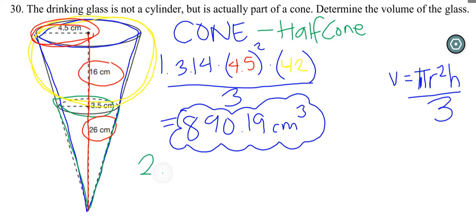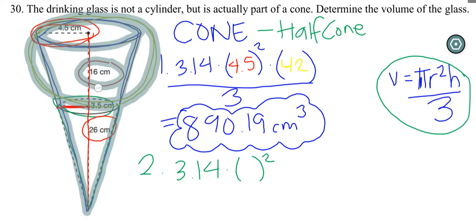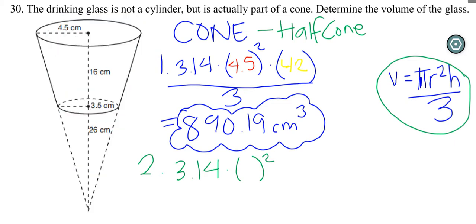Now I'm going to do the half cone. So we're still using this same formula over here. So 3.14 times the radius squared. Now the radius is right here. The radius on the mini cone, or the half cone, is right here. That's 3.5 centimeters. And then we times it by the height, which is here. And that's 26 centimeters. And then we'll divide the whole thing by 3.